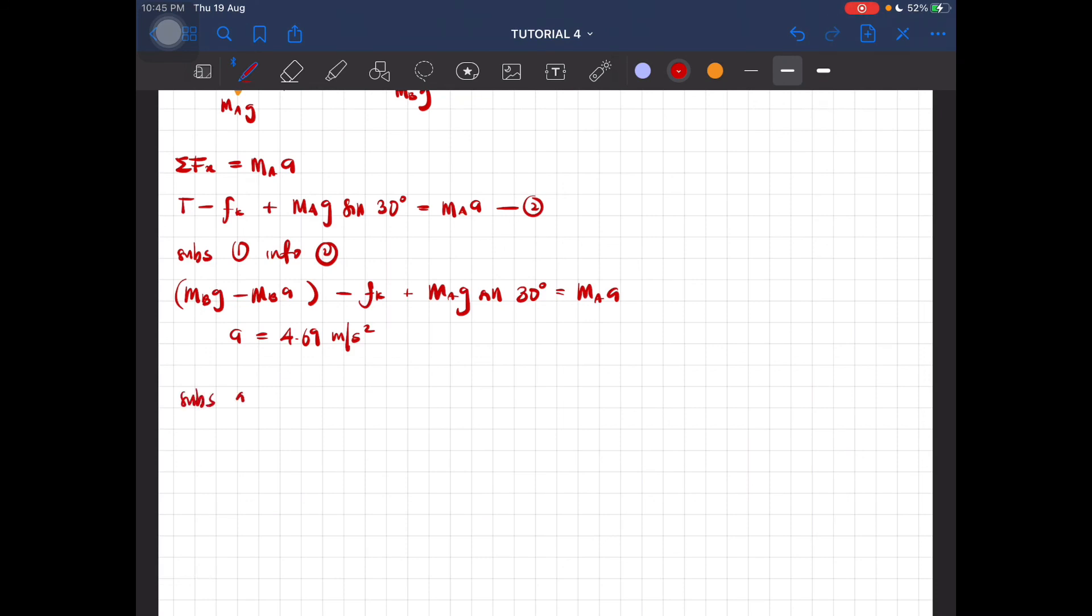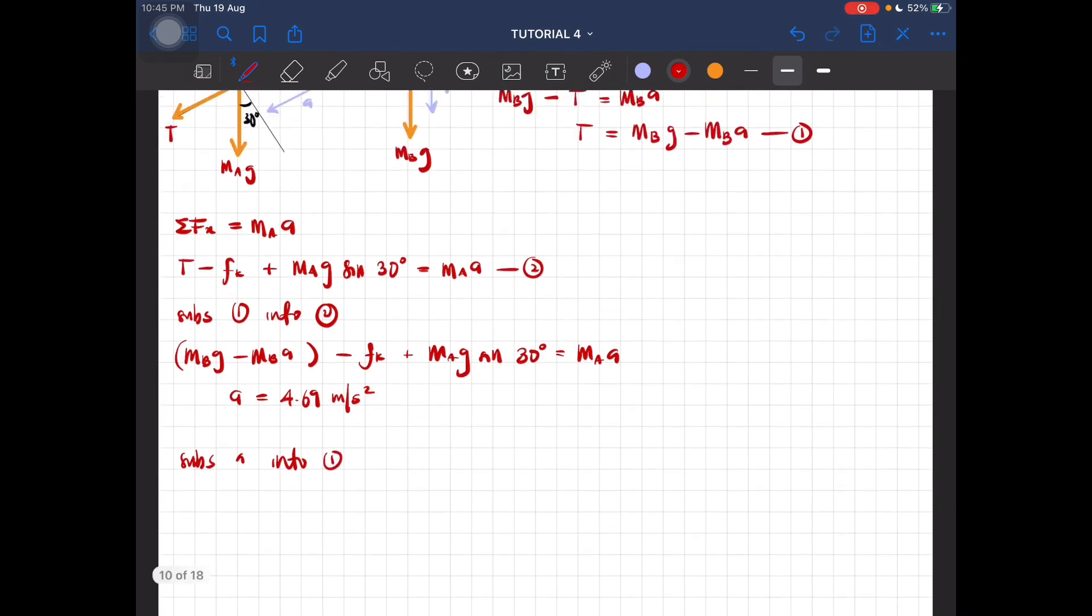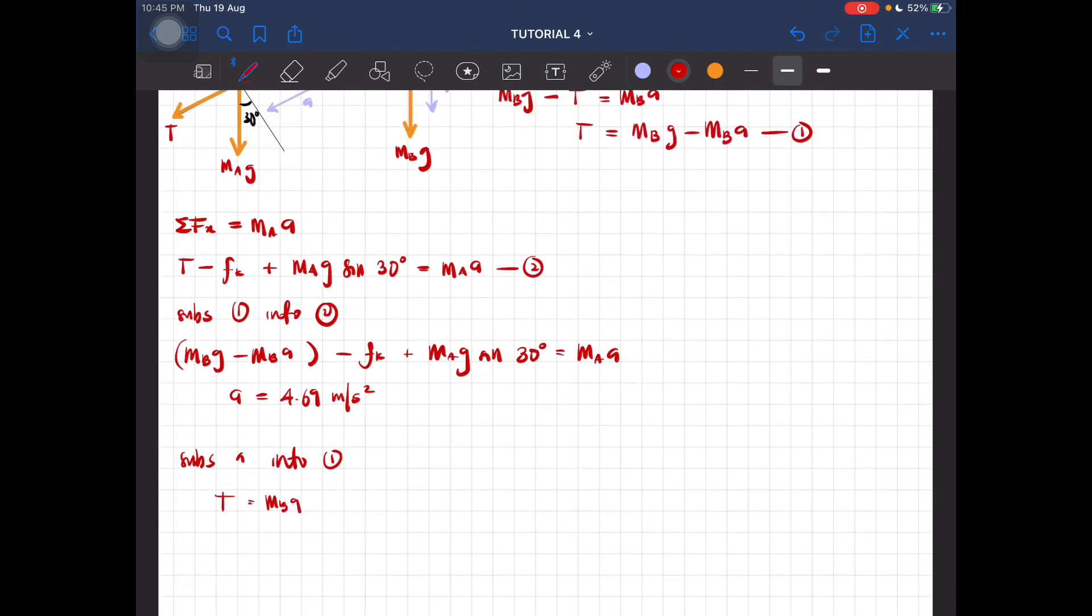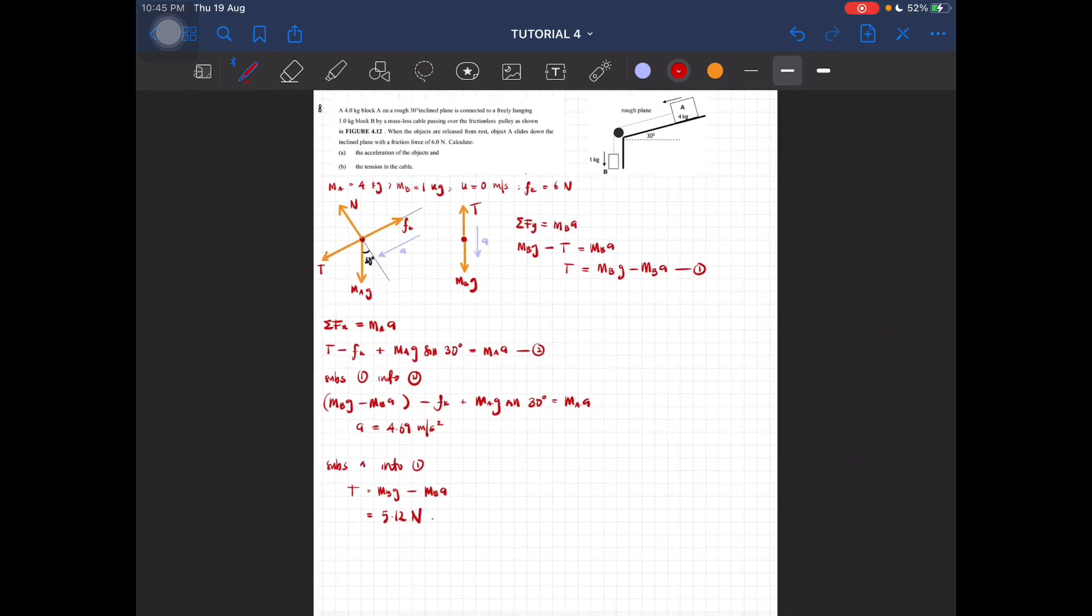For question B, to find the tension, we substitute a into equation 1: T equals m_B g minus m_B a. You then get the tension equal to 5.12 newtons. That is question number 8.